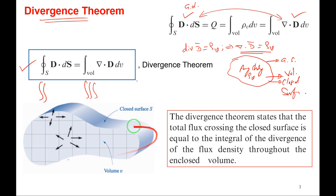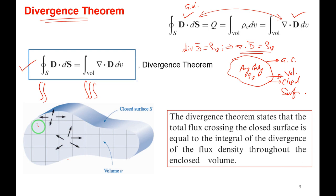Take this closed surface and divide it into sections — cross sections — by drawing horizontal and vertical lines, forming squares. If I consider point A, I want to find the divergence or spreading nature of the electric flux lines. The flux lines leaving a cell enter the adjacent cell, and at the boundary the flux lines leave the surface.